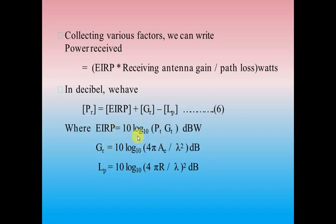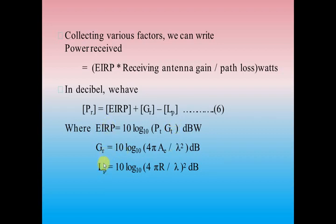There might be a problem on calculation of EIRP, the gain of the receiver antenna, as well as total path losses. Certain given terms are provided: lambda, effective area, the distance between the transmitter and the receiver, the amount of power transmitted, and the gain of the transmitter antenna. From these, we can easily find out the three parameters.